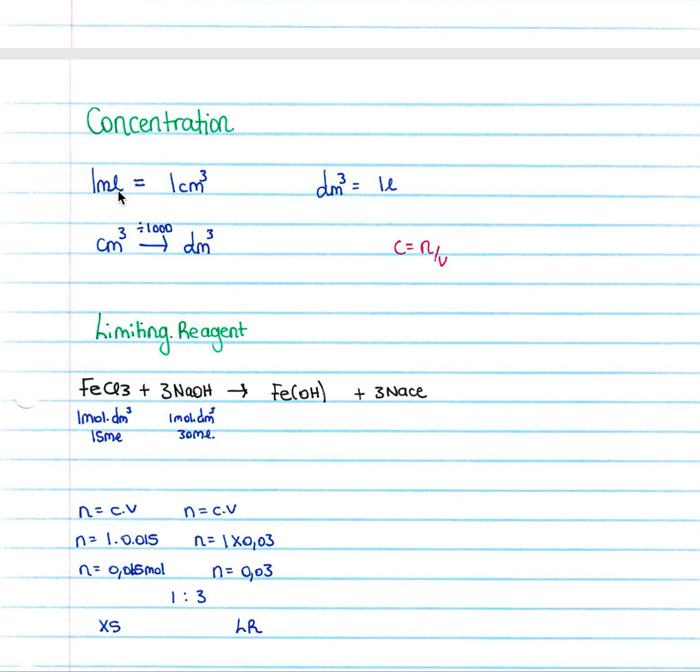We must know to calculate that one milliliter equals one cubic centimeter. From there we must know that a cubic centimeter divided by a thousand is a decimeter cubed, and we must always remember that in our concentration formula our volume must always be in decimeters cubed.